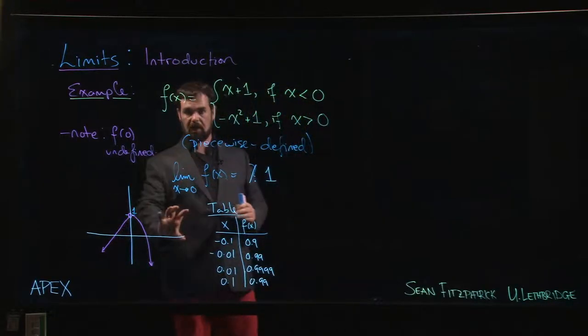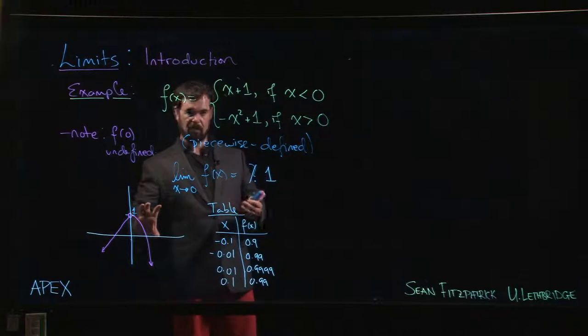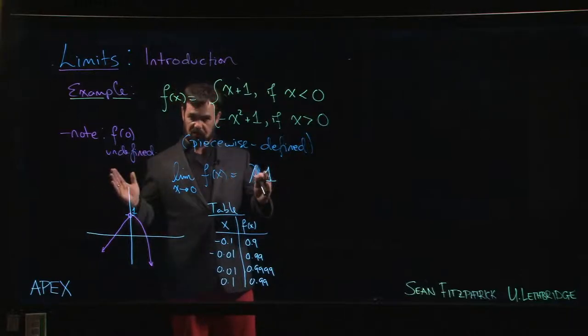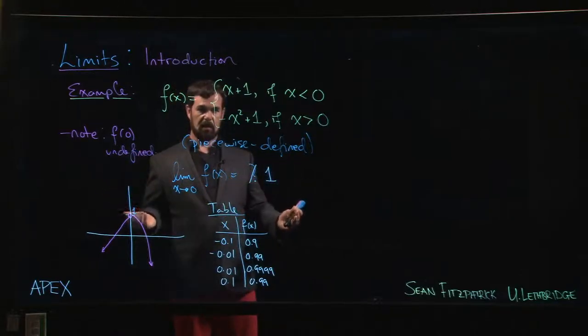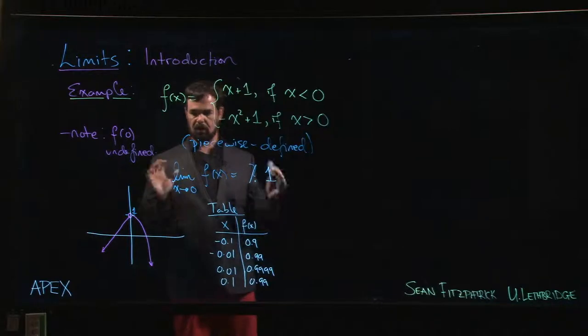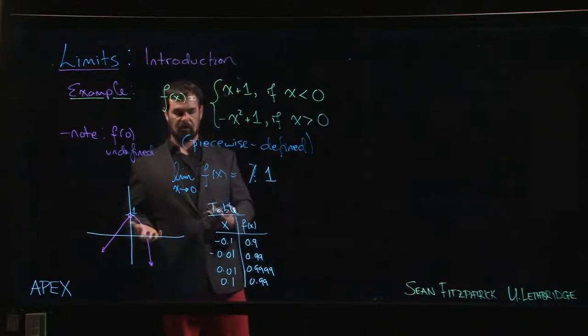We'll say what happens as x approaches 0 from the left, so negative values, what happens if x approaches 0 from the right, positive values. We'll look at those two separately, analyze them separately, and try to come to some conclusion about the overall limit.